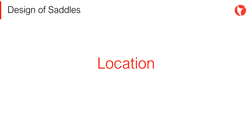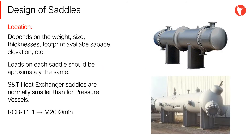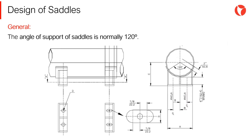The location of the saddles is a fundamental aspect of the design process for this type of equipment. There are numerous publications and recommendations about the location of the saddles. It is advisable to start the design of the heat exchanger supported by means of two saddles, placed in such a way that the loads on each of them are approximately the same. The support angle of the saddle used to support the shell and tube heat exchanger is normally 120 degrees.